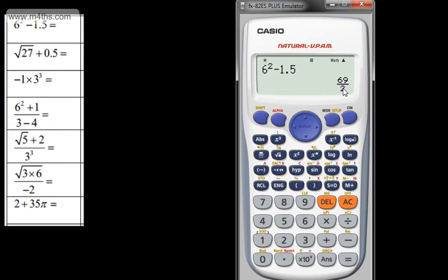That gives me 69 over 2. If I wanted to put this as a decimal answer I'd just press the S to D button. So that's going to give me 34.5.